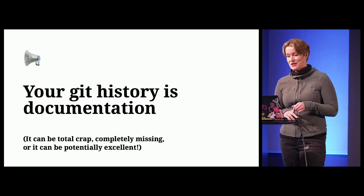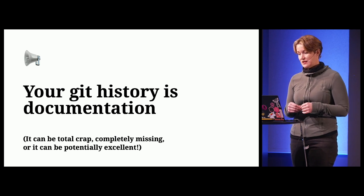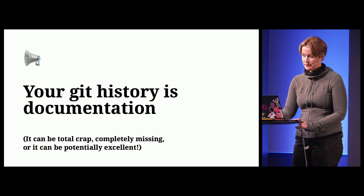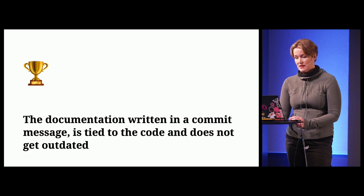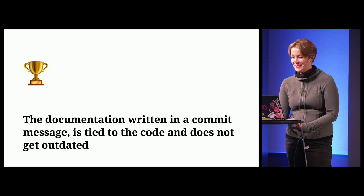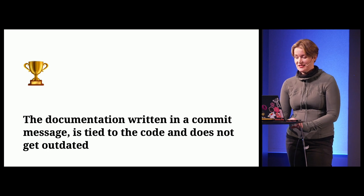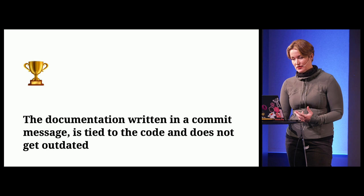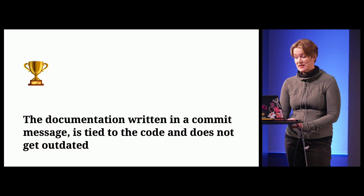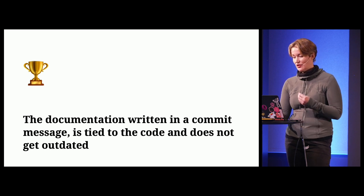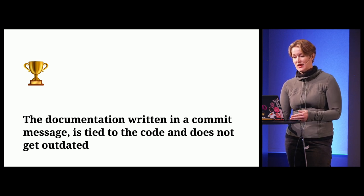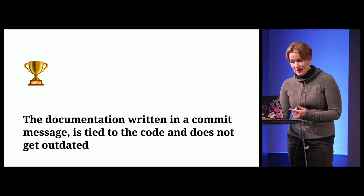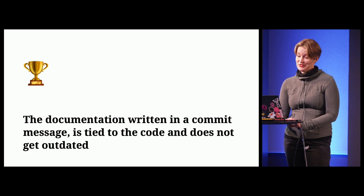Your Git history is documentation. And it can be total crap, completely missing, or potentially excellent. What I find really interesting about the documentation I can leave behind with a Git commit is that, unlike other types of documentation, the Git history follows its own timeline — it's tied to the code and does not get outdated. Code comments get outdated so fast that we make jokes about it. Readme files can be really difficult to know if they're current. But documentation within a commit is directly coupled to whatever version of running code. It still might be wrong, but it has the potential to represent our current best understanding of a code change. And it's a great opportunity, because the context we have in our brains at the time of making a commit is often lost if we don't write it down.